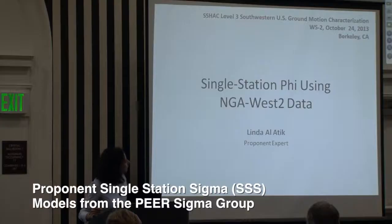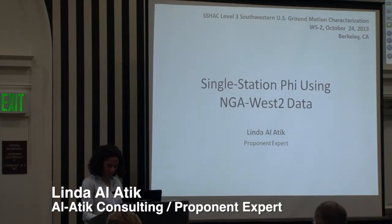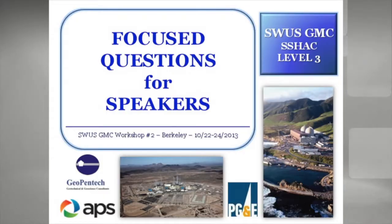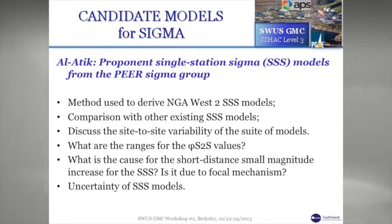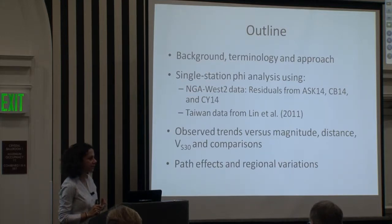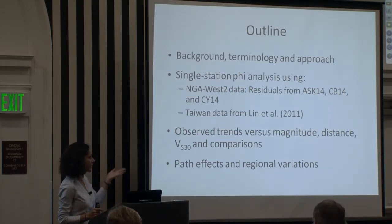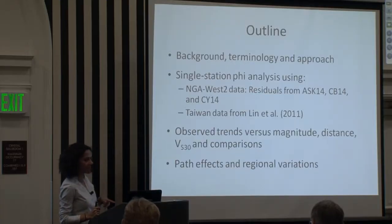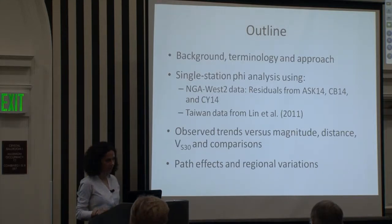My next presentation is on single-station phi, using mainly the NGA West 2 data, and I am acting as a proponent expert. I'll briefly give background on single-station phi terminology and the approach — Noam covered that earlier, so this will be brief. Then I'll show results of the single-station phi analysis using NGA West 2 residuals from Abrahamson et al., Campbell and Bozorgnia, and Chiou and Youngs, as well as residuals from the Taiwan data of the Lin et al. paper. I'll show observed trends with magnitude, distance, VS30, some comparisons, and hopefully cover path effects and regional variations.